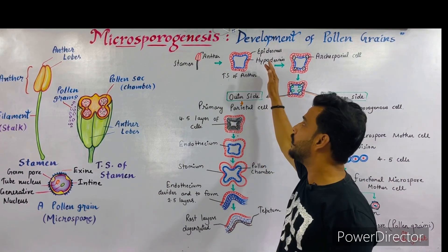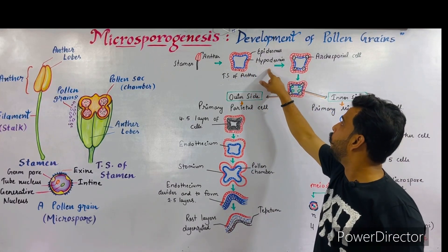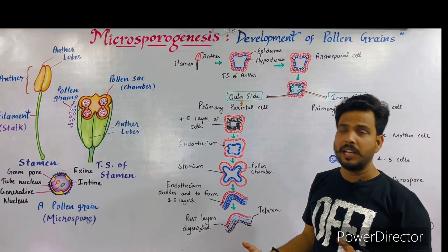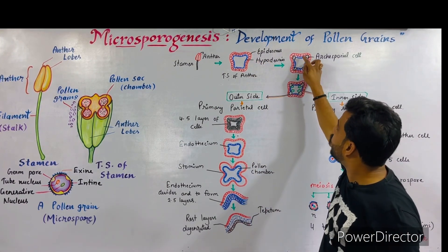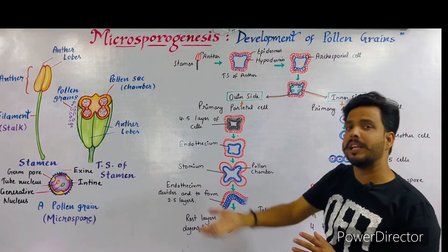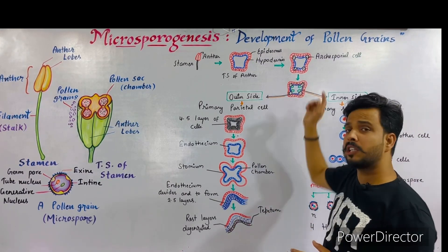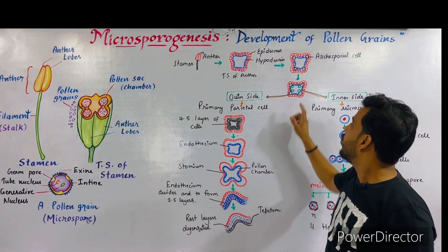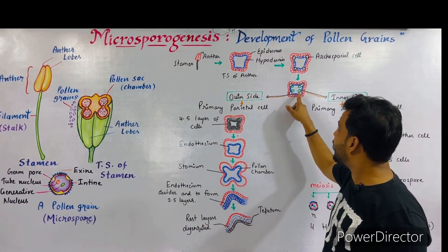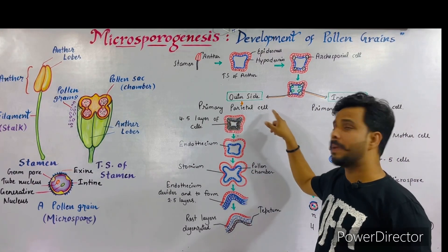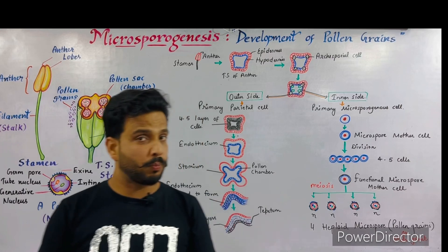In the TS of the young anther, the outer layer is known as the epidermis while the inner one is known as the hypodermis. In the hypodermis layer, one or two cells become enlarged in size and are known as archesporial cells. Each archesporial cell further divides to form two types of cells: on the outer side, primary parietal cells, and on the inner side, primary microsporogenous cells. The primary parietal cell will produce the pollen chamber, while the primary microsporogenous cell will produce the pollen grains.